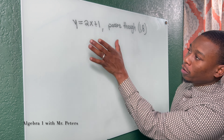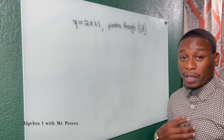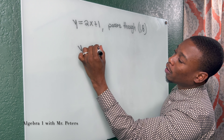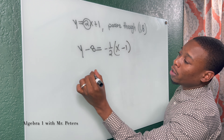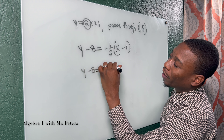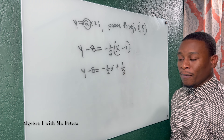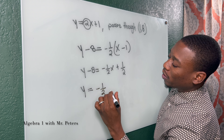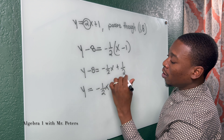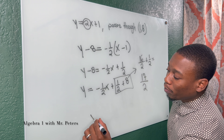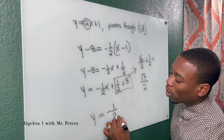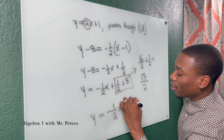Moving on to this last problem — they gave us the equation, told us the point it passes through, and they want the perpendicular line. So Y minus eight is equal to — remember, we're taking the negative reciprocal — so this two turns into negative one half, times X minus one. Simplifying: Y minus eight is equal to negative one half X plus one half. Then at the last step, Y is equal to negative one half X plus one half plus eight. We need a common denominator, so eight becomes 16 over two, and adding one half gives us 17 over two. So my final equation is Y is equal to negative one half X plus 17 over two.